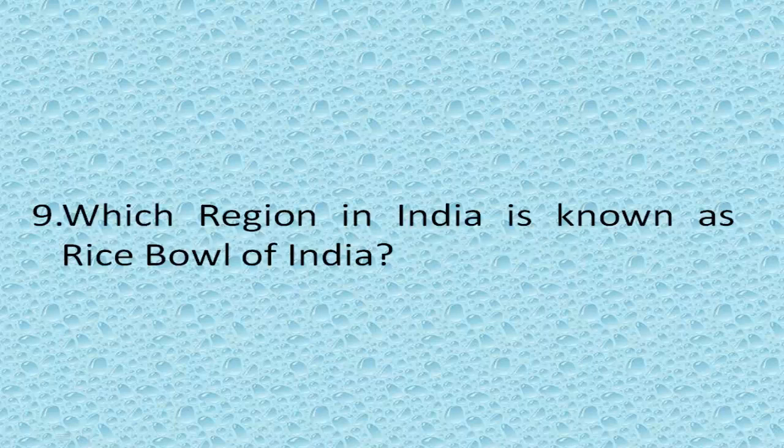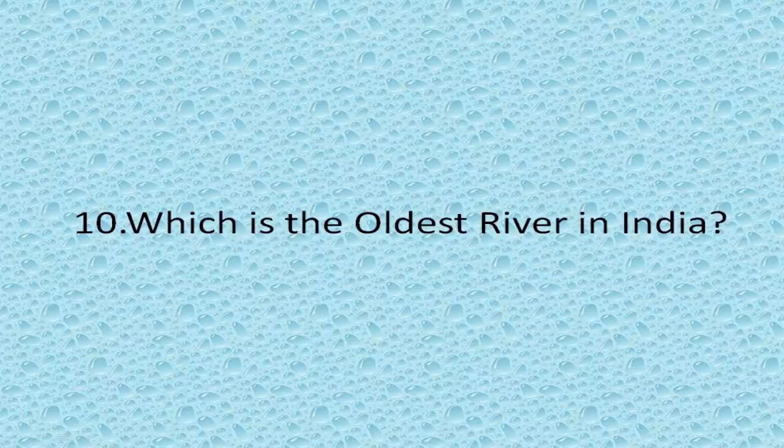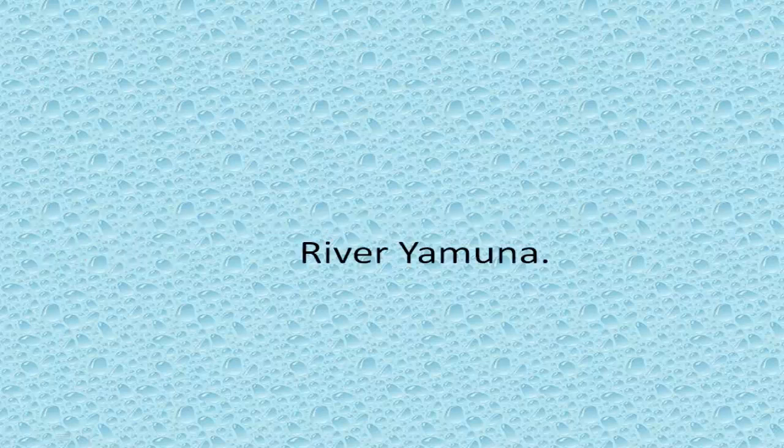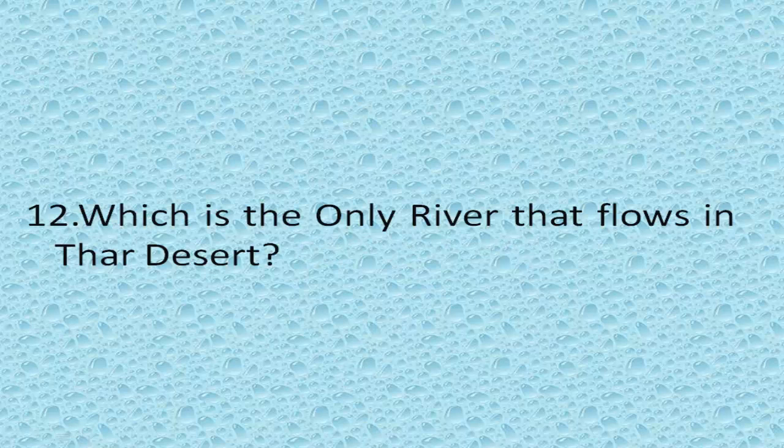Which region in India is known as the rice bowl of India? Krishna-Godavari Delta region. Which is the oldest river in India? Narmada River. Which is the longest tributary river of India? River Yamuna.